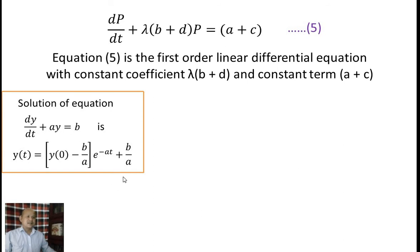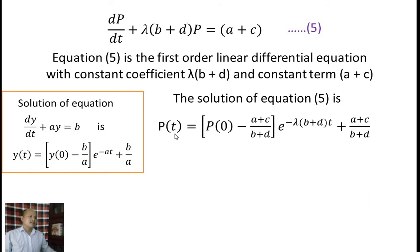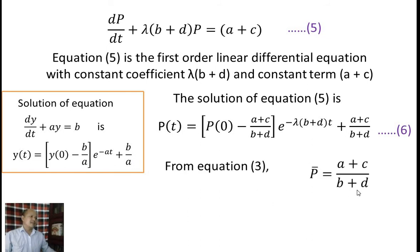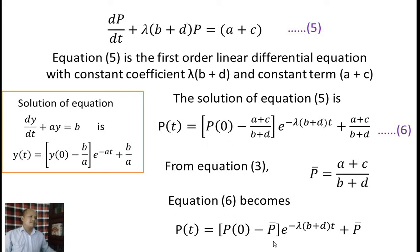Using this general solution, the solution of equation number 5 is: pt equals (p0 minus (a plus c)/(b plus d)) times e to the power minus lambda(b plus d)t, plus (a plus c)/(b plus d), that is equation number 6. From equation 3, p-bar equals (a plus c)/(b plus d), so equation 6 becomes pt equals (p0 minus p-bar) times e to the power minus lambda(b plus d)t, plus p-bar, that is equation number 7.